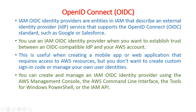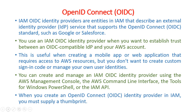You can create and manage an IAM OIDC identity provider using the AWS Management Console, the AWS Command Line Interface, the Tools for Windows PowerShell, or the IAM API. OpenID Connect lets you manage different functionality. Previously with CloudTrail, all activities on your account were stored as historical data so you can monitor and retrieve activity history whenever you need it.